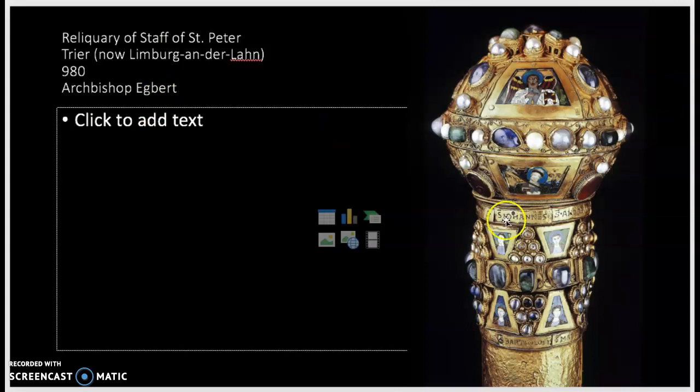We're looking at the top of the staff. This is very ornate and we see little tiny enamel plaques here, some larger ones above, that give us portraits of the apostles paired with some of the earlier bishops of Trier. There's also other sets on the reliquary staff that pair popes with some of the later bishops of Trier. We don't see spolia being used here, but instead this pairing of portraiture suggests a greater lineage, a greater authenticity for this relic.